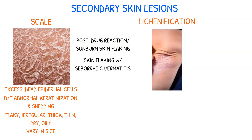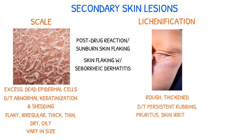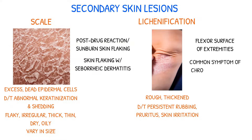Lichenification is a condition in which the skin becomes rough and thickened as a result of persistent rubbing, pruritus, or skin irritation. This often occurs on the flexor surface of extremities and is a common symptom of chronic dermatitis.